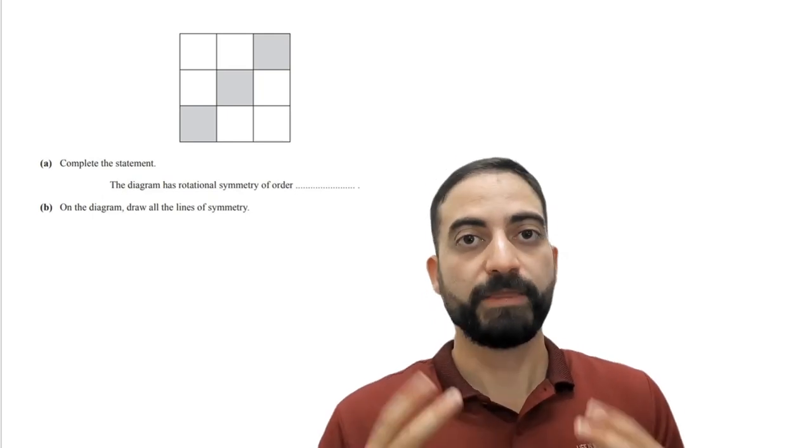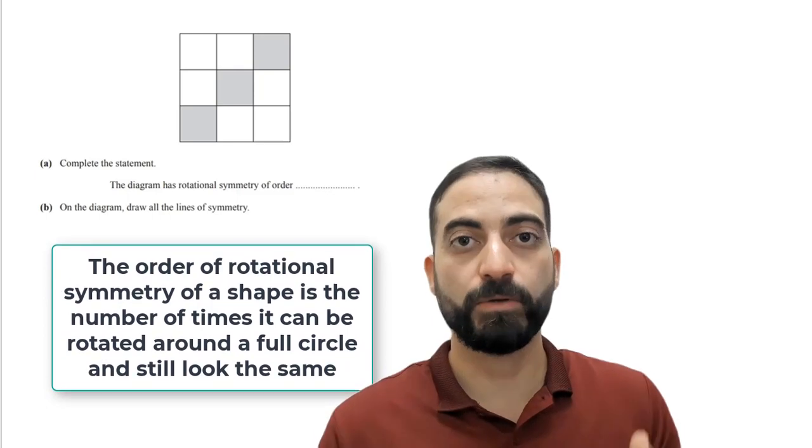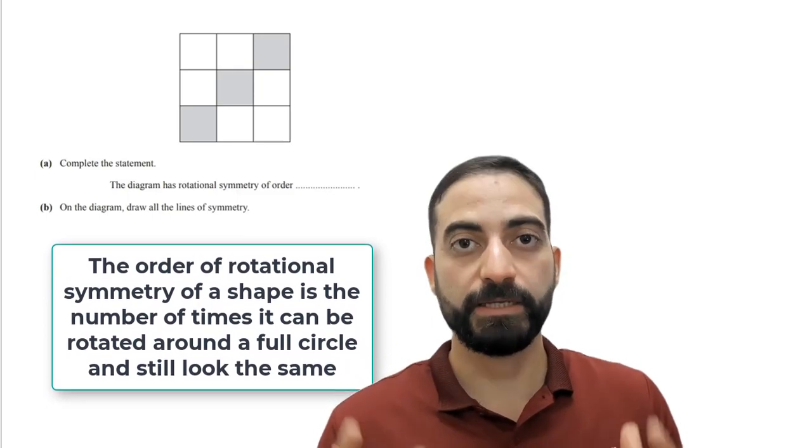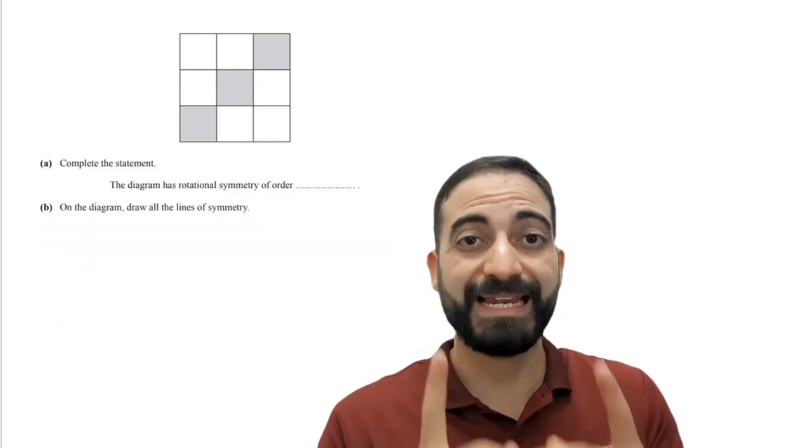The order of rotational symmetry of a shape is the number of times it can be rotated around a full circle and still look the same. So in one rotation, how many times can we get the same look?